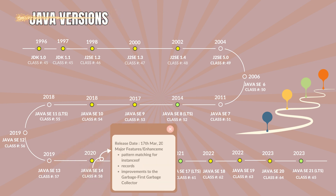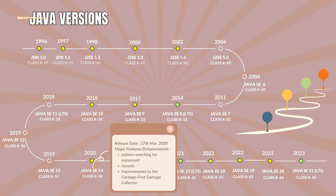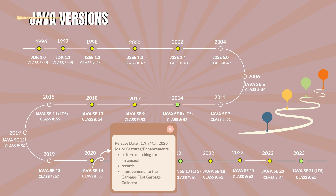Java 14.0 with the class file version 58. It was released on 17th March 2020. The major features and enhancements are pattern matching for switch as a preview feature, records as a preview feature, the new packaging tool JPackage, and improvements to the Garbage-First garbage collector.